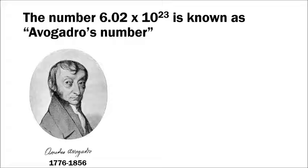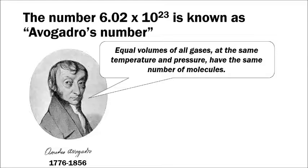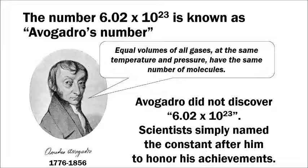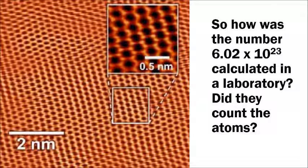That number is known as Avogadro's number, in honor of the Italian scientist Amadeo Avogadro, who lived in the latter half of the 18th and early 19th century. His experiments led to Avogadro's Law, which states that equal volumes of all gases at the same temperature and pressure have the same number of molecules. This principle eventually became fundamental to understanding the atomic and molecular view of matter, and when 6.02 × 10²³ was established in the laboratory, it was named in his honor — though he himself did not discover that number.